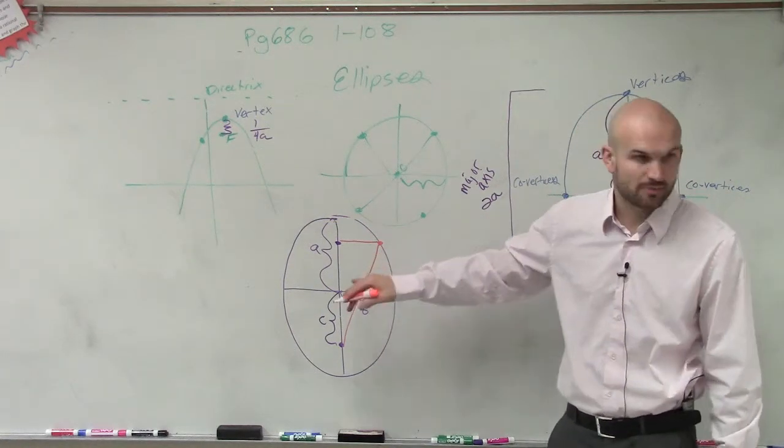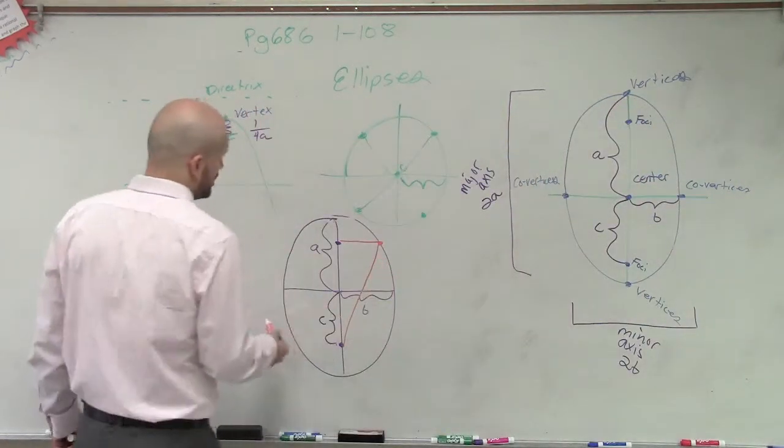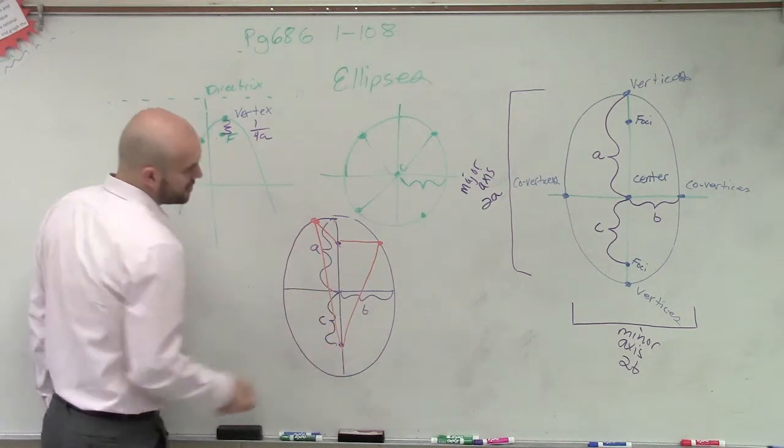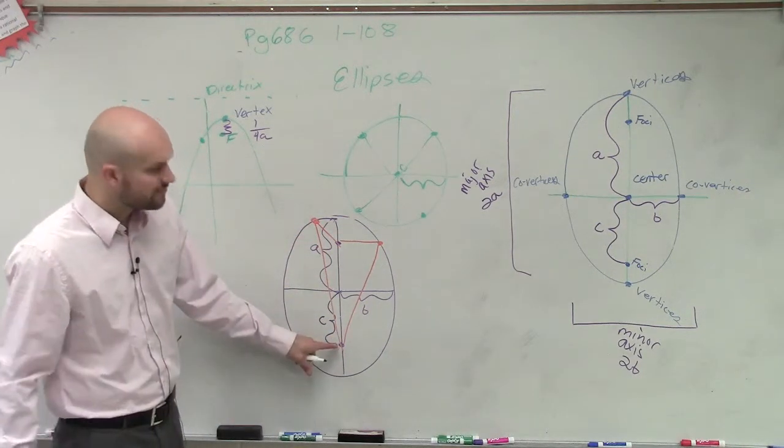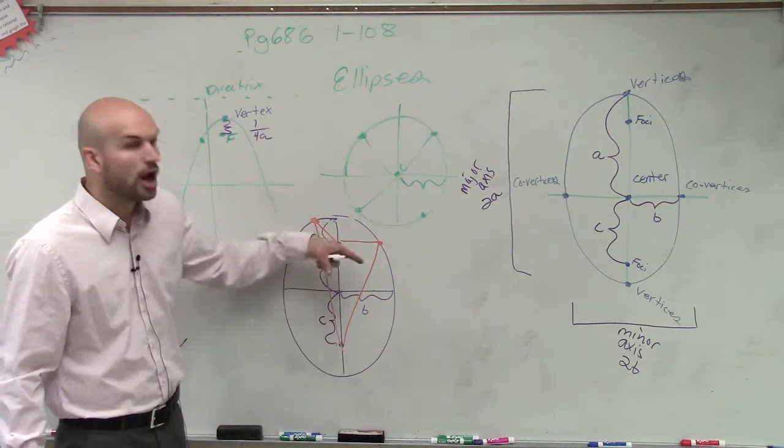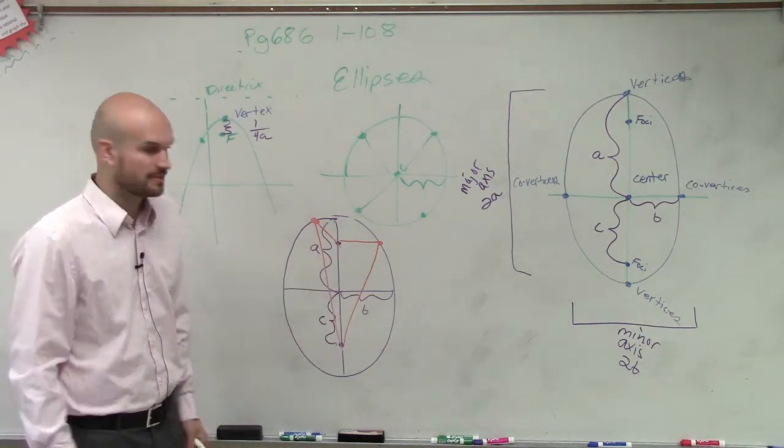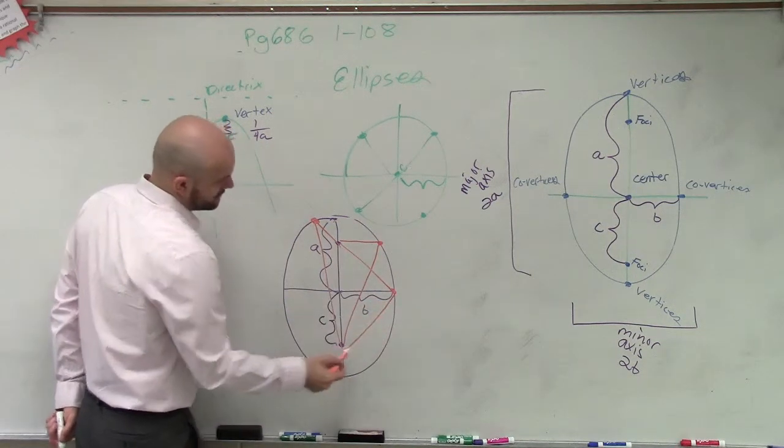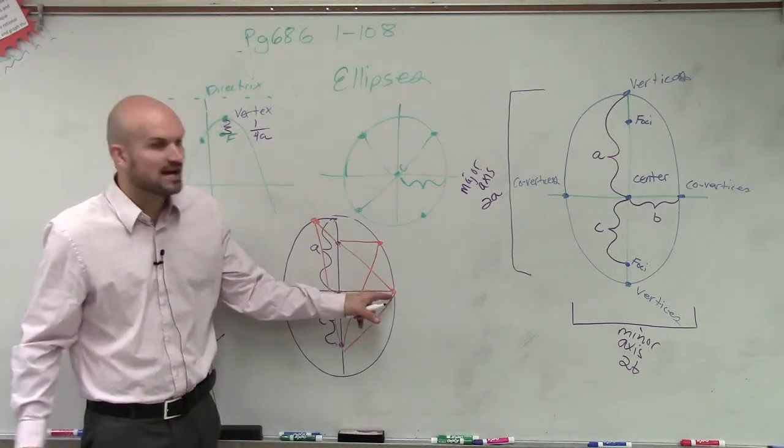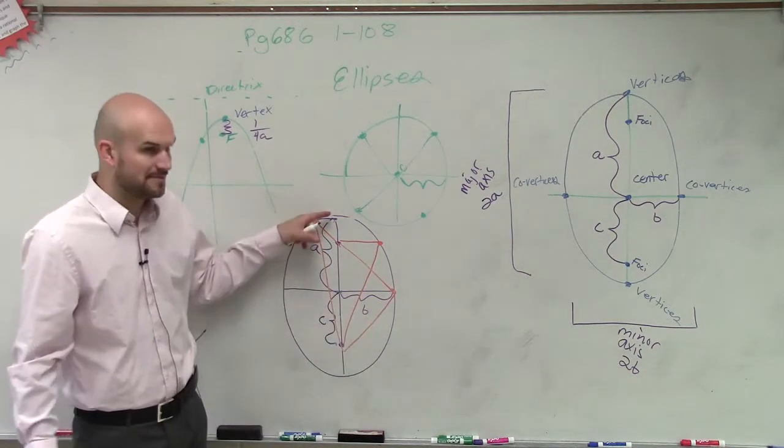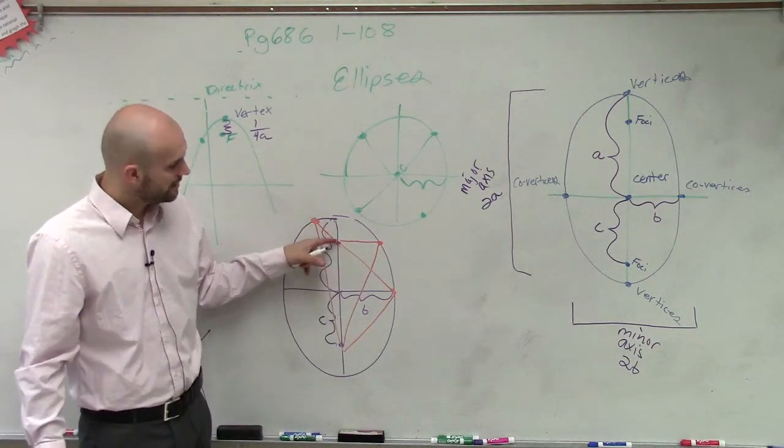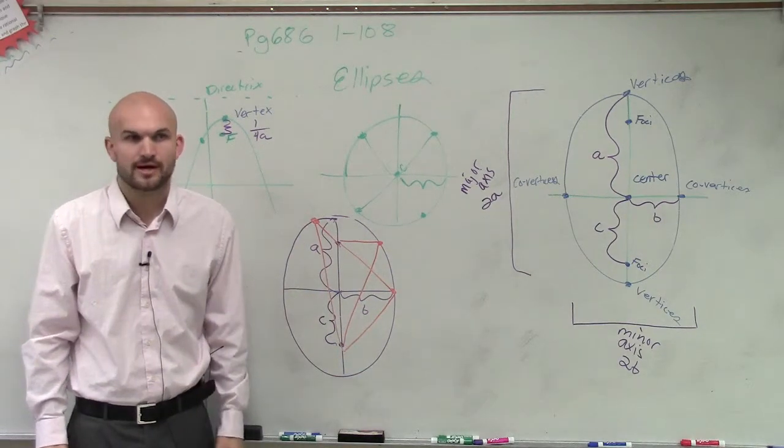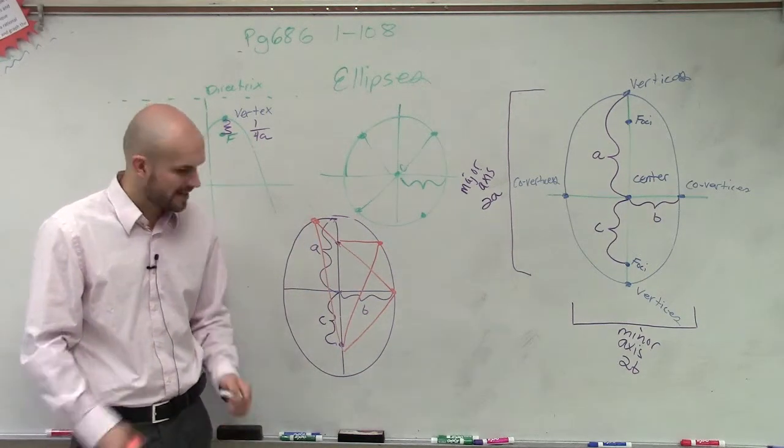It doesn't matter where this point is. So if I pick another point, the sum of the distances to both of my foci are always going to equal the same value. So if I pick a point here, again, the sum of the distances from any point on an ellipse to each foci is always going to equal the same value. That's your definition of your ellipse.